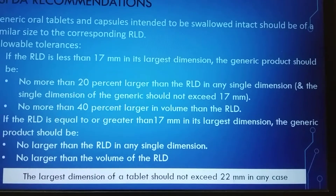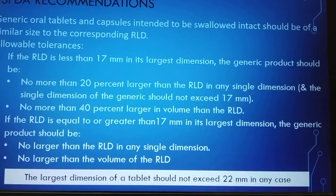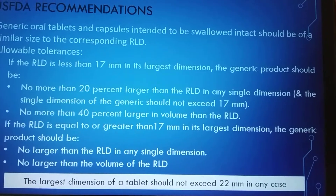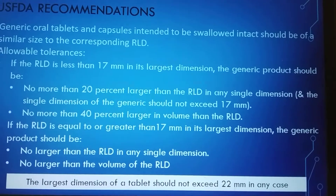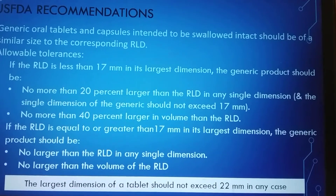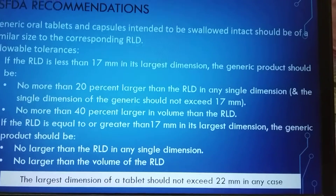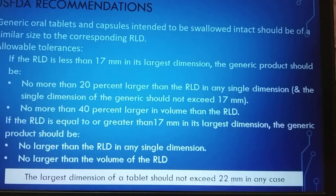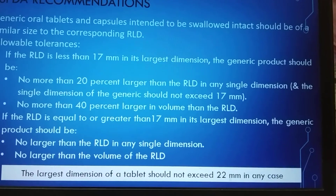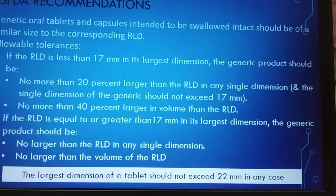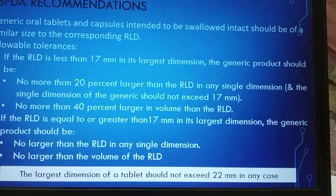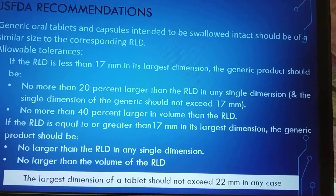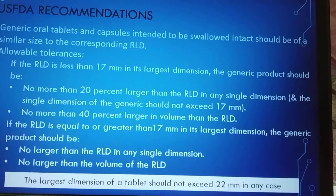USFDA expects the generic tablet to have a similar size and shape to the innovator RLD, but allows some tolerances for generic manufacturers. For an RLD with a largest dimension of 17 mm or less, the generic product should not be more than 20% larger than the RLD in any single dimension, and no single dimension of the generic product should exceed 17 mm.